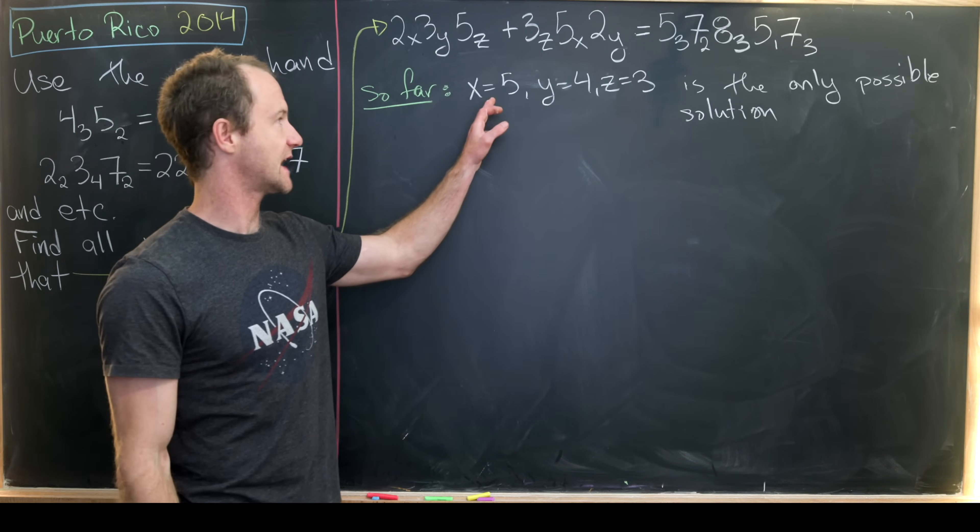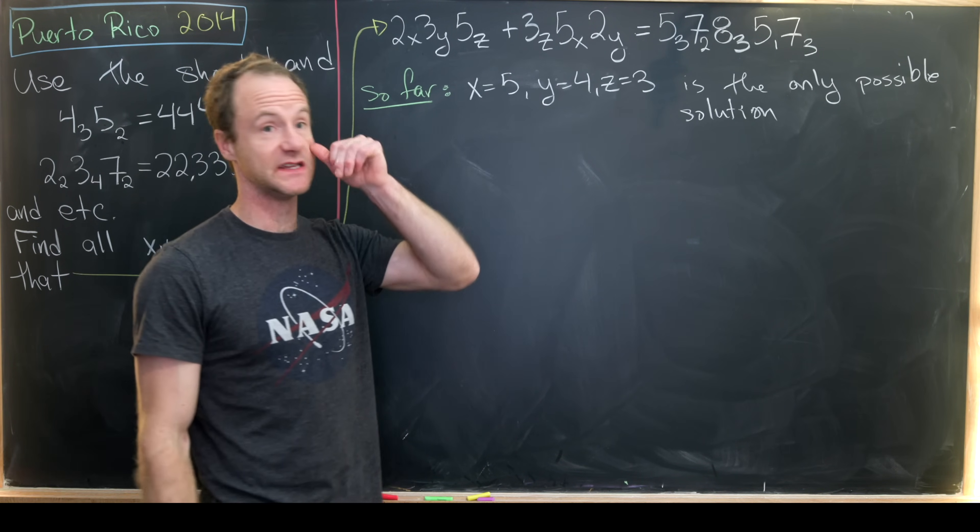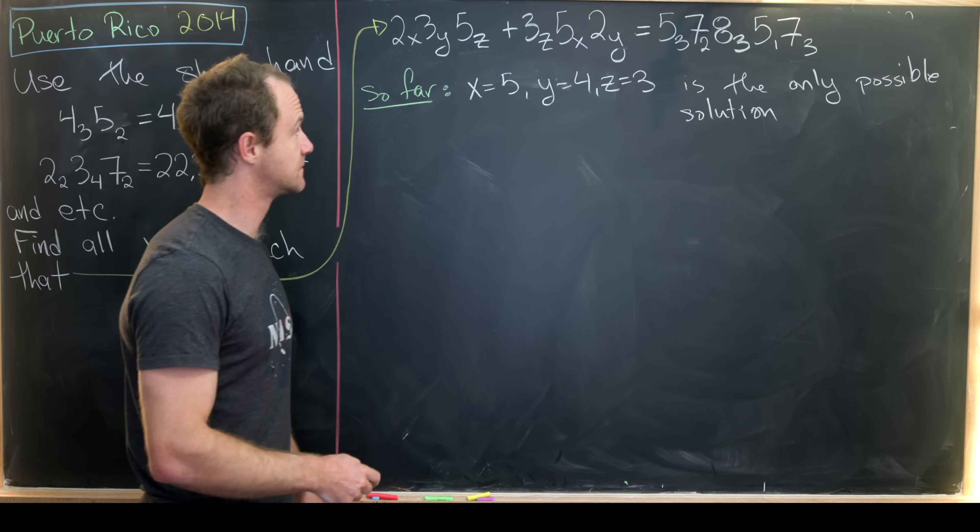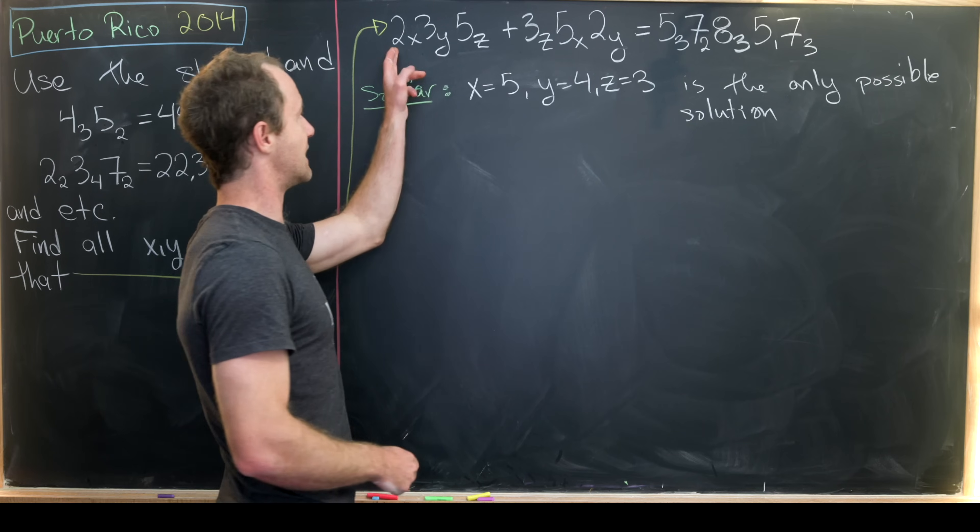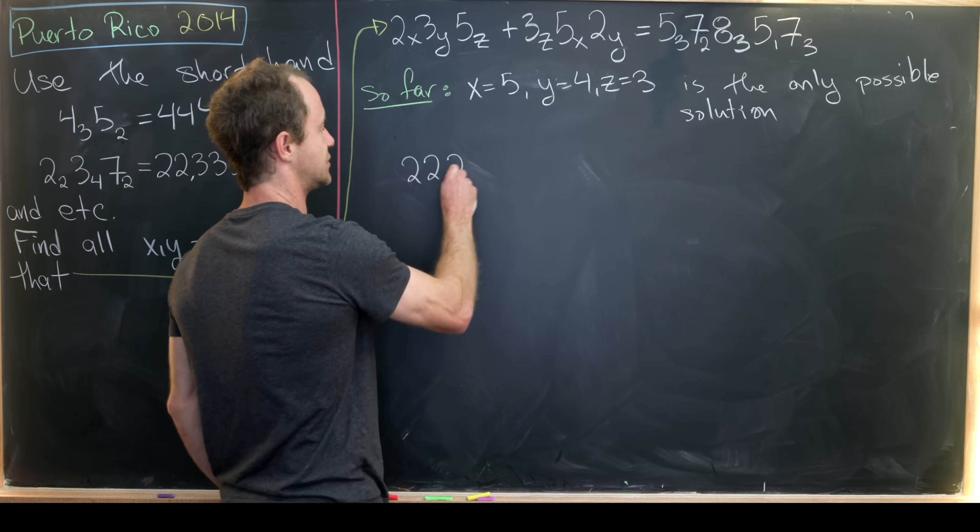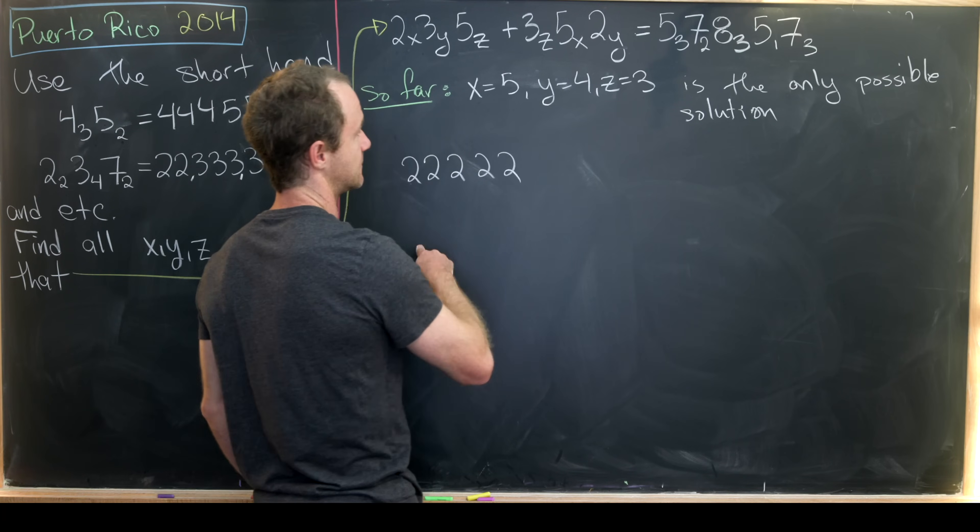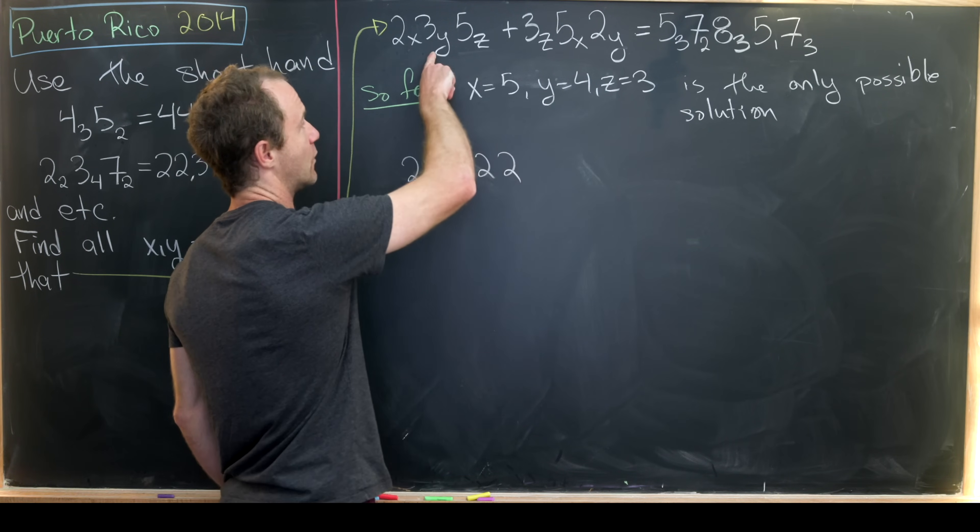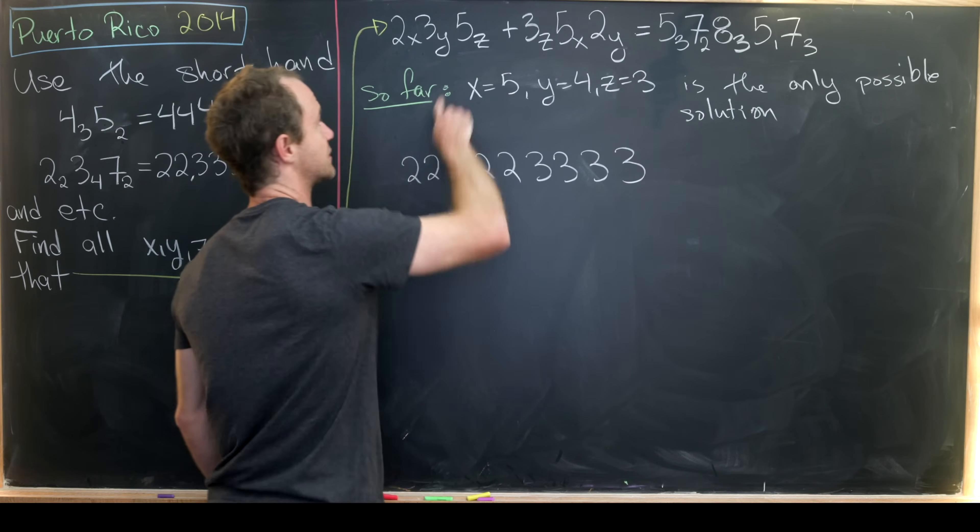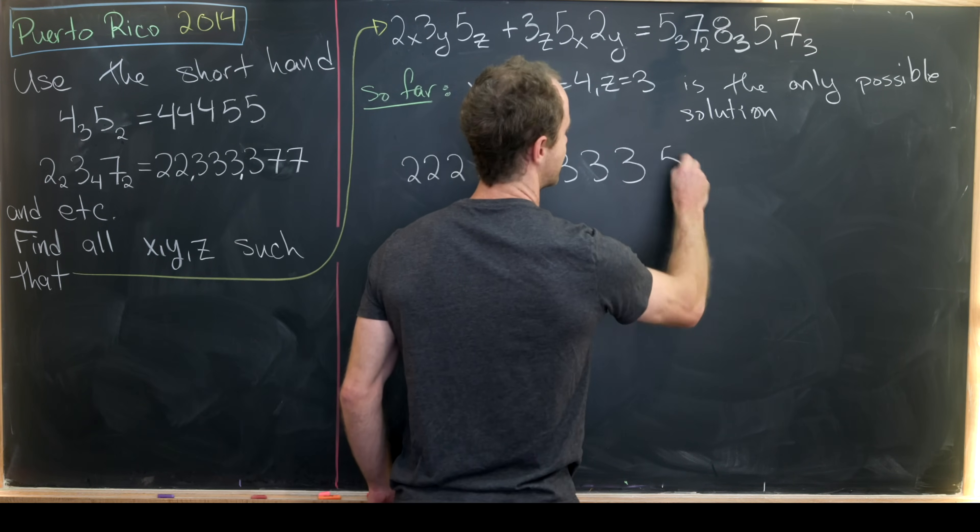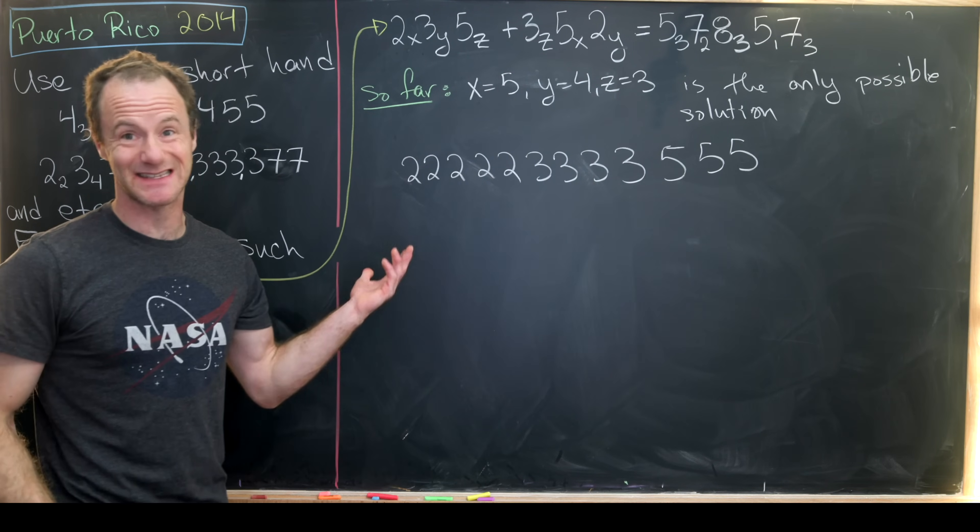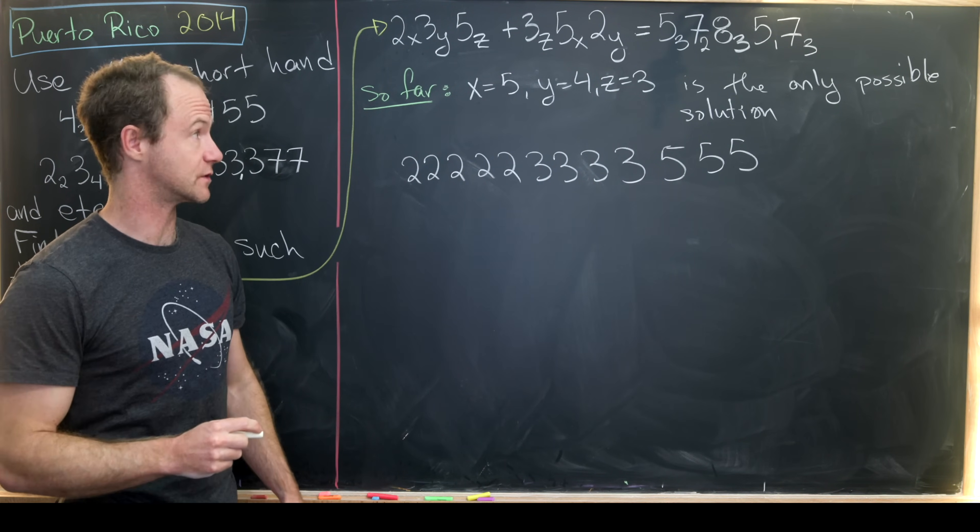Now let's go ahead and check that solution. So far we've shown that x equals 5, y equals 4, and z equals 3 is the only possible solution. Now we'll check that it is a solution. If x equals 5 then this first number starts with 5 twos. So we have 22222. Then if y is equal to 4 we have 4 threes: 3333. And if z is equal to 3 we have 3 fives: 555. And now I'm just going to stack these and add them like you would do in grade school.